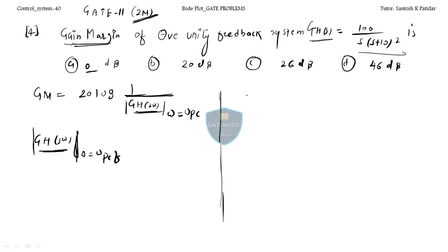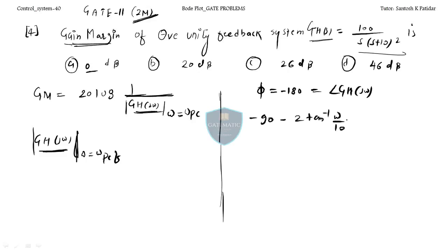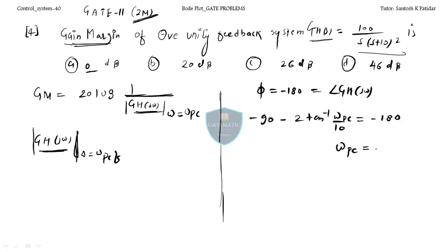The angle of the system is minus 90 minus 2×tan⁻¹(ω/10). Setting this equal to minus 180 degrees and solving, you get ω_pc = 10 radians per second. This is the phase crossover frequency — the frequency at which the phase of the system equals minus 180 degrees.